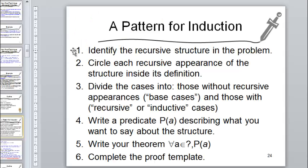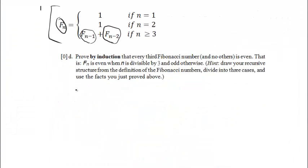The first step in the pattern for induction is to identify the recursive structure in the problem, which we've already done. We're going to use the recursive structure of the Fibonacci numbers to structure our proof. We circle each recursive appearance of the structure inside its definition, then divide the cases into those without recursive appearances — the base cases — and those with recursive appearances — the recursive or inductive cases.